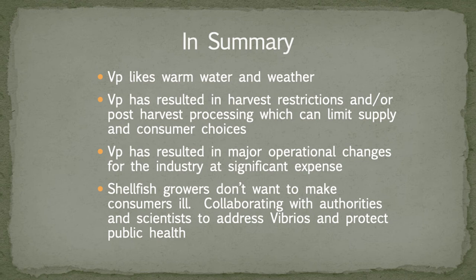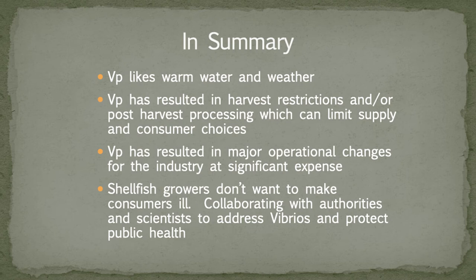In summary, VP likes warm water and warm weather. It's resulted here in the United States in harvest restrictions and/or post-harvest processing, which can limit supply and consumer choices. It definitely has resulted in major operational changes for the industry at significant expense, and for some, it has meant not operating during the summer months. The industry has collaborated in all of these efforts — we don't want to make people sick with our product. There's been lots of cooperation, whether through the ISSC in rulemaking, in states with rulemaking, or with scientists trying to find solutions for safe oysters.